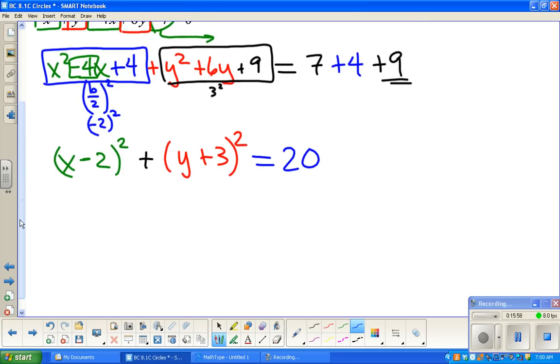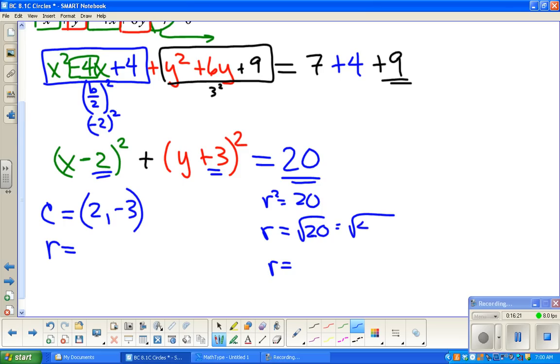So what's the center? What's the radius? And let's do a little graph. Well, the center, again, inverse and inverse. So 2, negative 3. And remember, this is the radius squared. So if the radius squared is 20, then the radius is the square root of 20. Now, when I list my answer, I'm going to have to do, well, 20 is 4 times 5. So this is going to be 2 root 5.